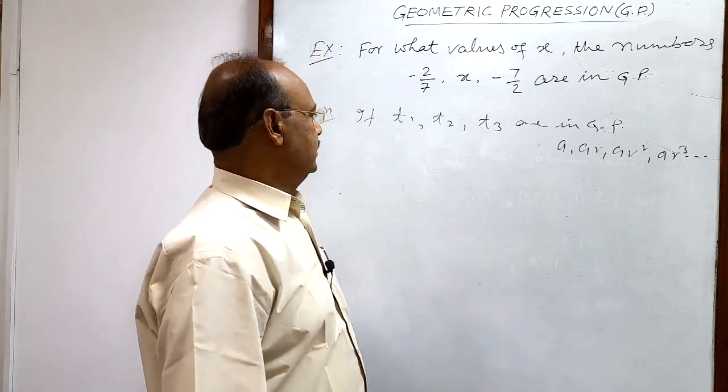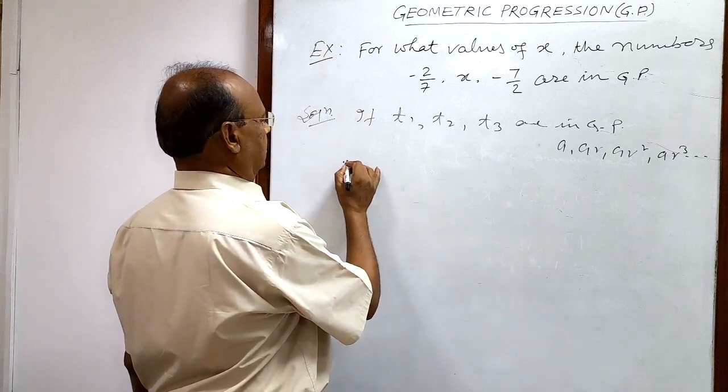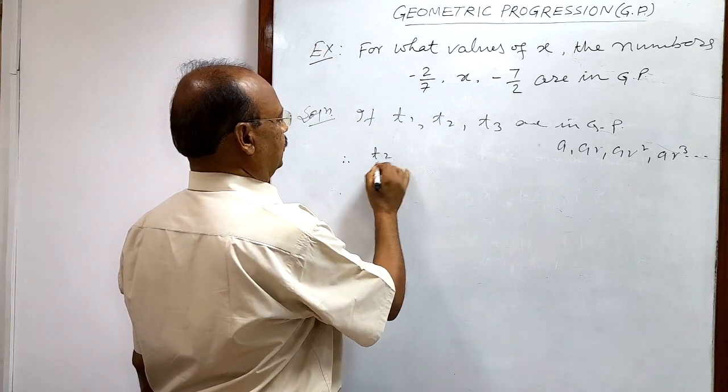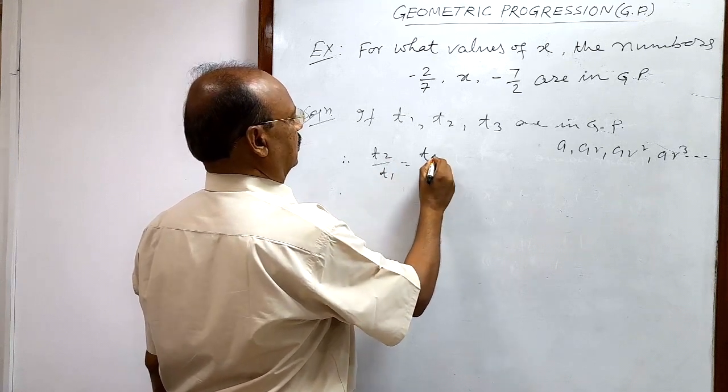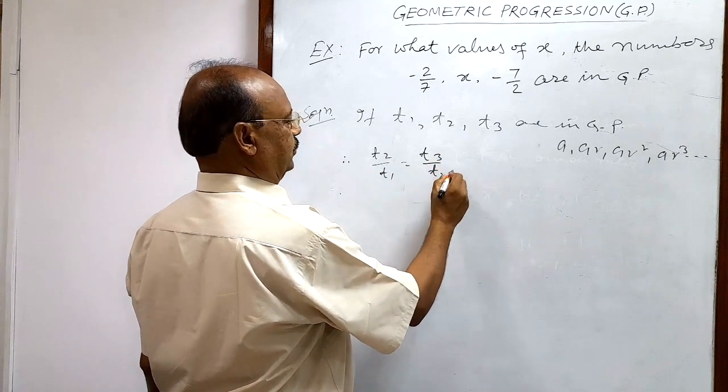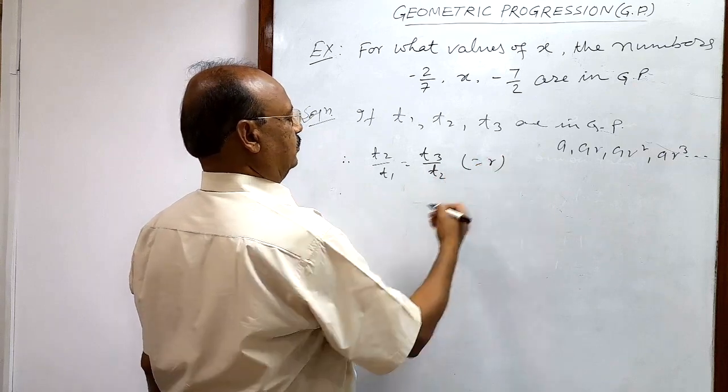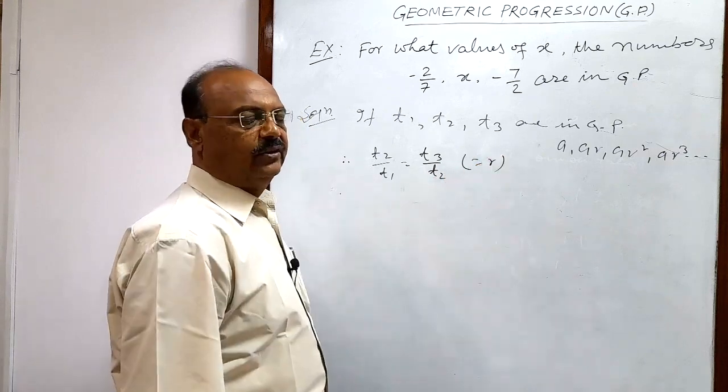With the help of this concept, we can write here that therefore T2 upon T1 is equal to T3 upon T2, because each of this ratio is equal to common ratio.